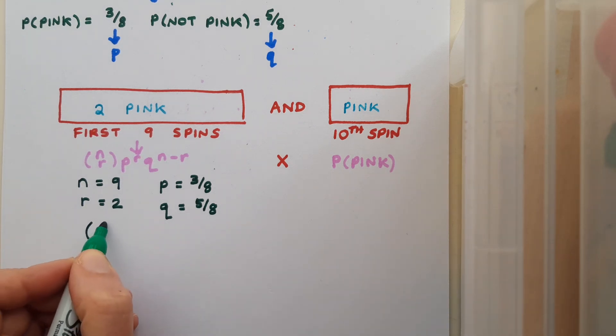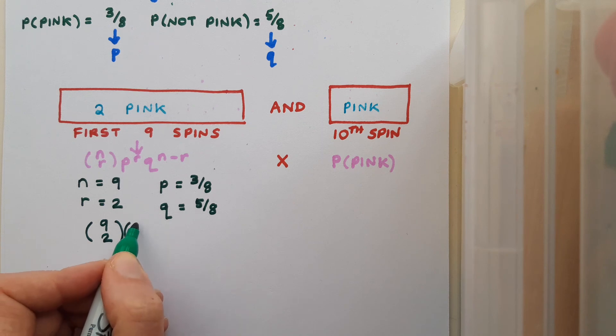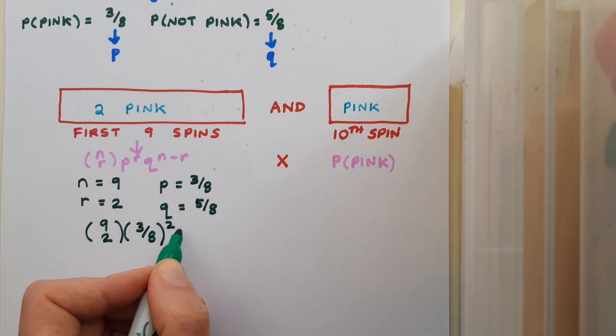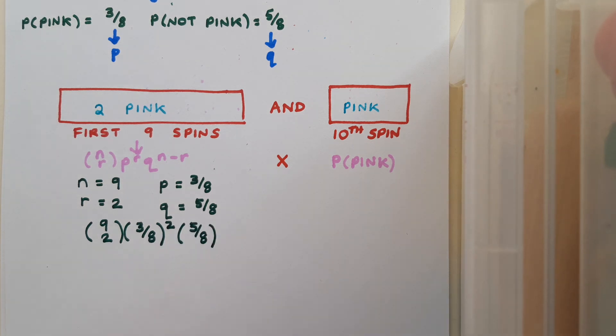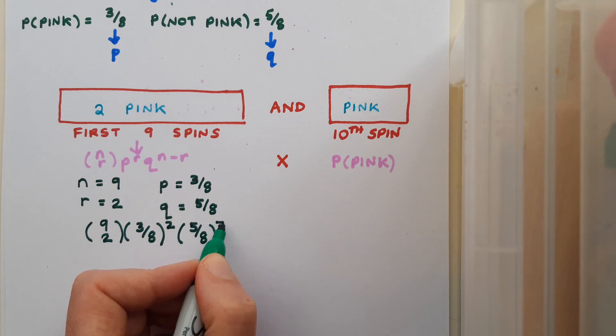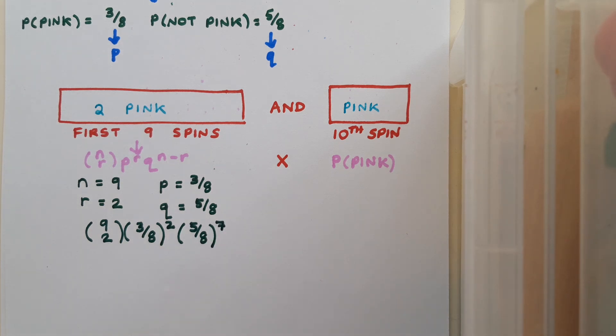So that's going to be nine choose two. P is three over eight. That's success, and I want that to happen twice. And then Q is five over eight. That's failure, and that's going to happen seven times. And I'm multiplying this by the probability of pink, which is three over eight.